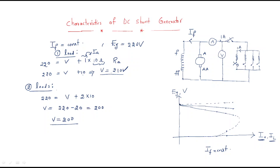When we plot the characteristics, we get two types of curves. The dotted line represents the ideal case with no voltage drop. If we consider armature reaction only, the generated EMF follows a different curve. Armature reaction involves armature reactance — not resistance — and this must be considered separately.